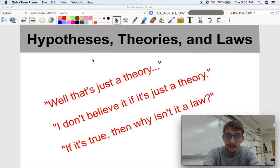You might hear the layperson say something like, well, that's just a theory, or I don't believe it if it's just a theory, or if it's true, then why isn't it a law? Now, the common misconception is that theories are not proven by science, and laws are proven by science, and thus things that we regard as theories are therefore not as credible or as believable or as well-supported as, say, a scientific law. If we're talking about the law of gravity versus the theory of evolution, one seems to be set in stone, while the other seems to be somebody's idea that has not been proven, and that could not be more wrong.